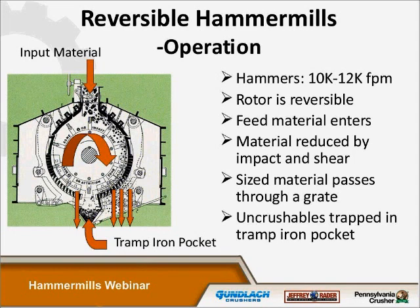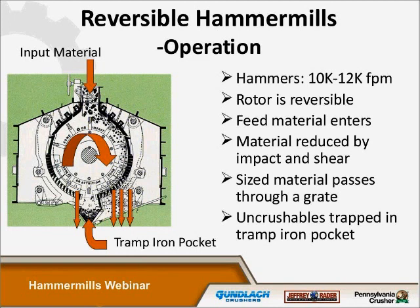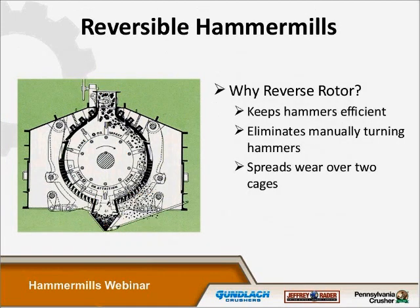In a reversible crusher, the material falls directly on top of the hammers and onto the rotor. There's an impact section at the top where the hammers drive the material against breaker plates and breaker blocks, then the material is swept down into the sizing section where there are screen bars. The tramp iron pocket is located in the bottom of the crusher. Regular reversal helps keep the hammers wearing on both sides of the face — you have two faces and spread wear over two cages, so you really have almost two crushers in one.